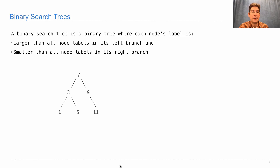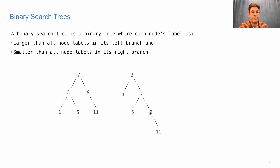But that's not the only binary search tree for this collection of numbers. Here's another one. The property still holds that everything to the left of 3 is smaller and everything to the right of 3 is larger, and everything to the left of 7 is smaller and everything to the right of 7 is larger. If I had placed 11 as the left branch of 9, it would no longer be a binary search tree — 11 has to go to the right because it's larger than 9. Here's a third one. See if you can draw a fourth.